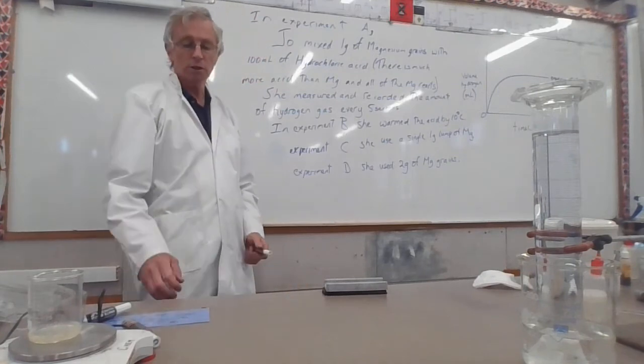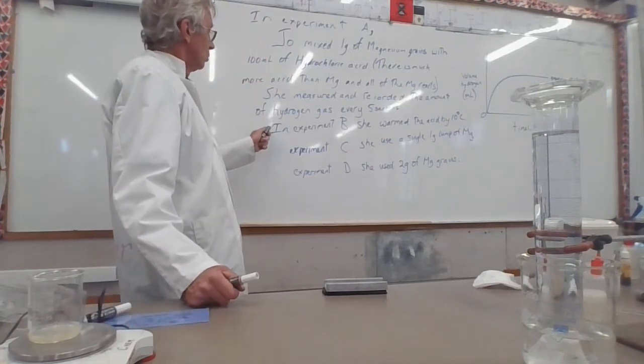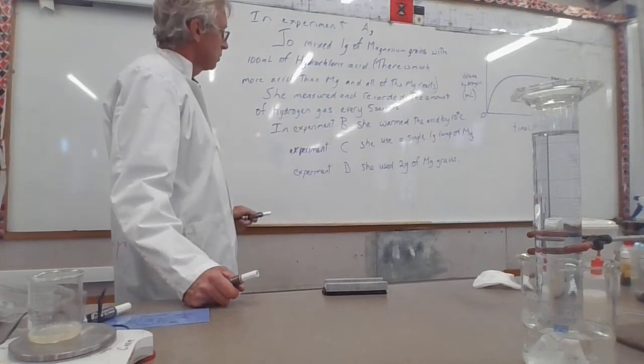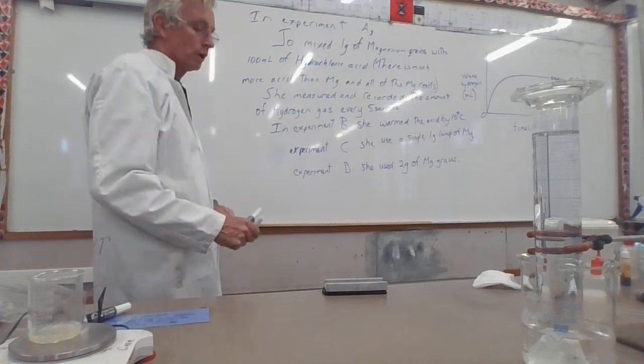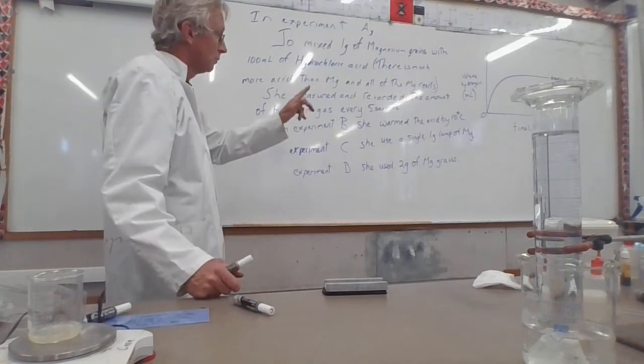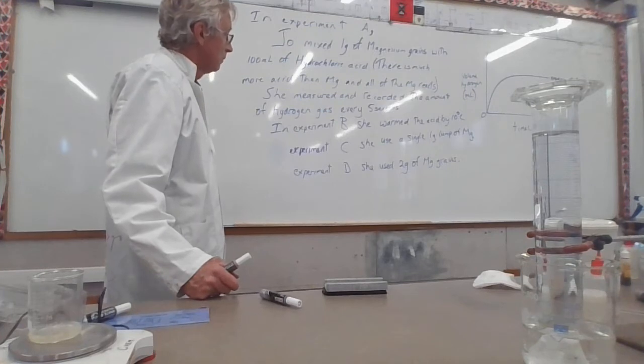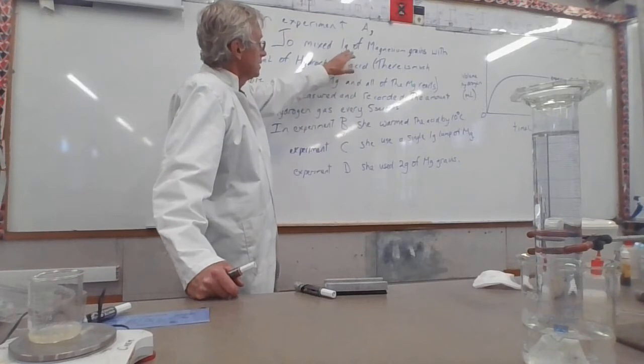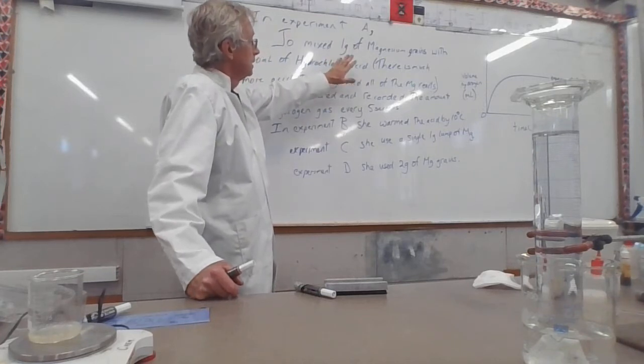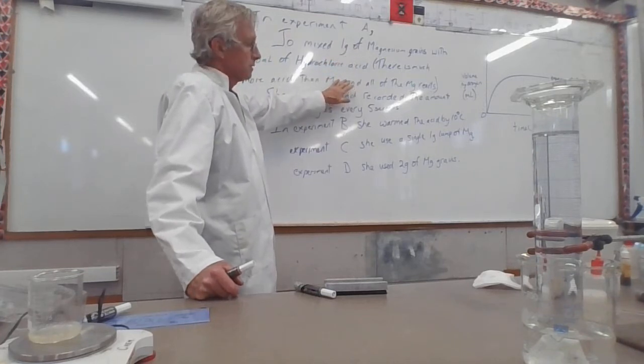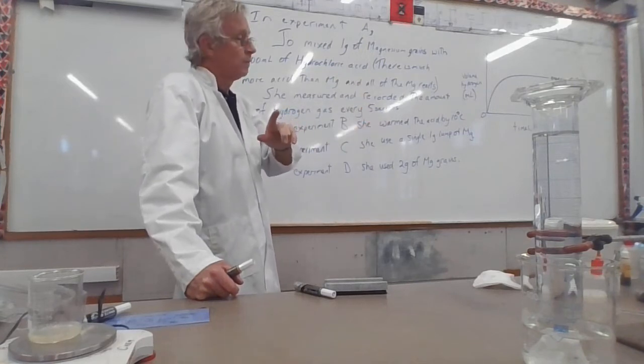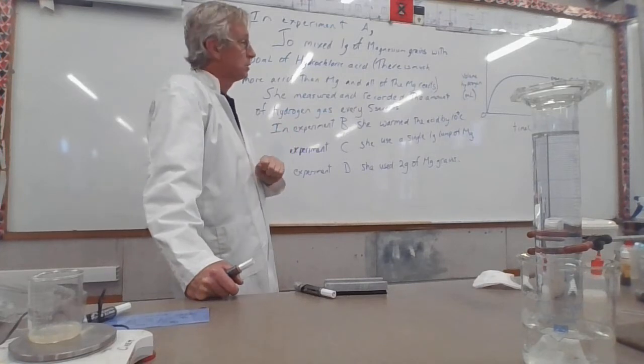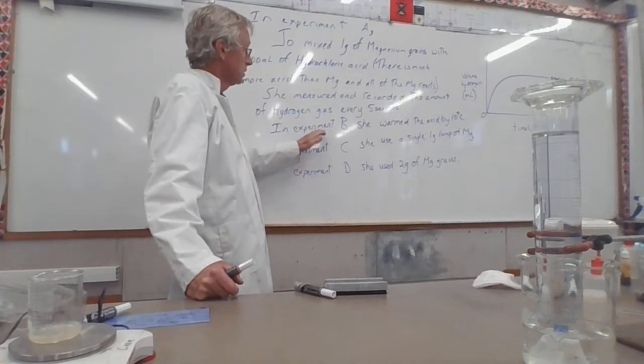And the typical question is to say, draw the expected result on the graph for each of those experiments. Usually they only ask you to do one of them on one graph, but I'm going to do all three of them on one graph over there. Now, one thing to note that in these two here, exactly the same amount of magnesium and acid are mixed, and so the final amount of gas that is made when all of the magnesium is dissolved is going to be the same for these two experiments.